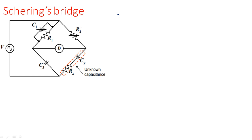Maxwell's bridge and Hay's bridge are used to measure the unknown inductance in series with the leakage resistance. Schering bridge is a type of capacitance comparison bridge where we can measure the unknown capacitance in comparison with the known capacitance C1. So here we need to calculate the unknown capacitance.